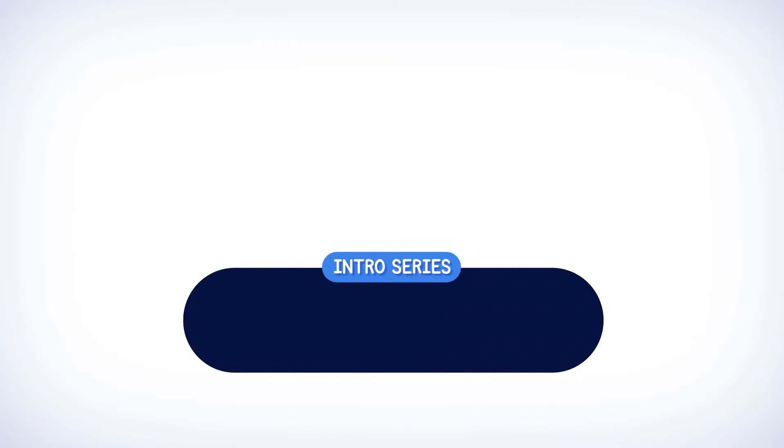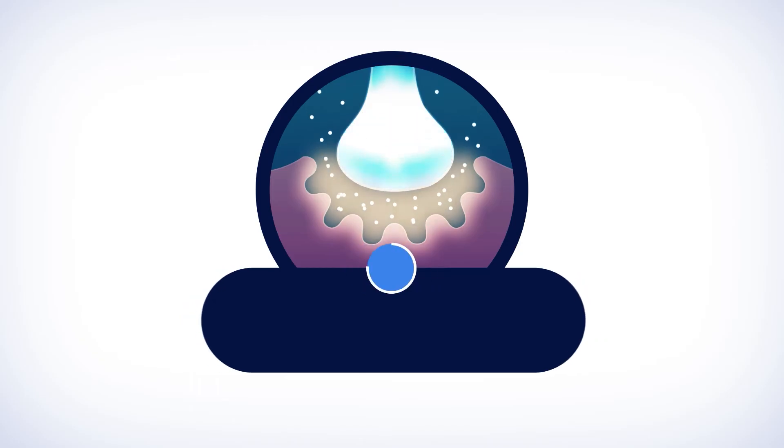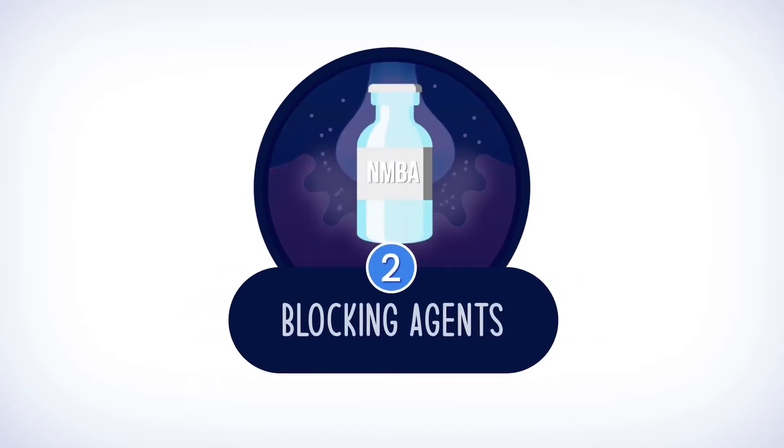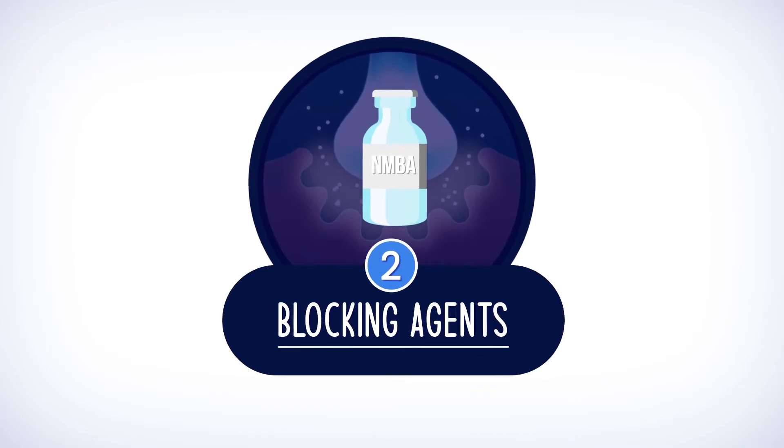Hi and welcome back to this introductory series on the neuromuscular junction. In part two we'll be focusing on neuromuscular blocking agents, their basic interaction in the neuromuscular junction, and how it produces temporary muscle paralysis when administered to a patient.